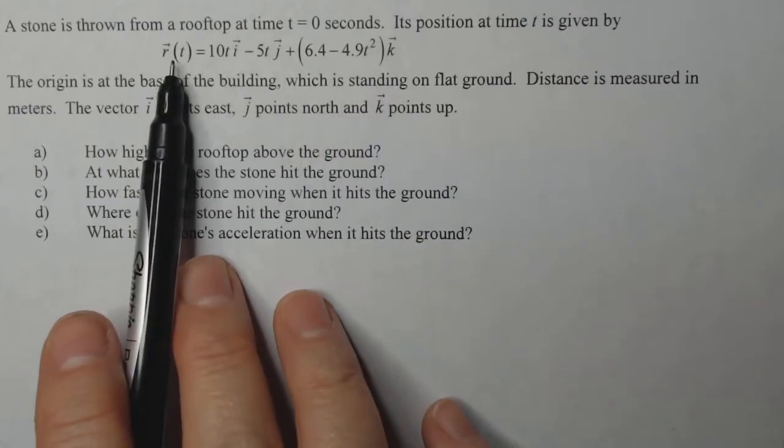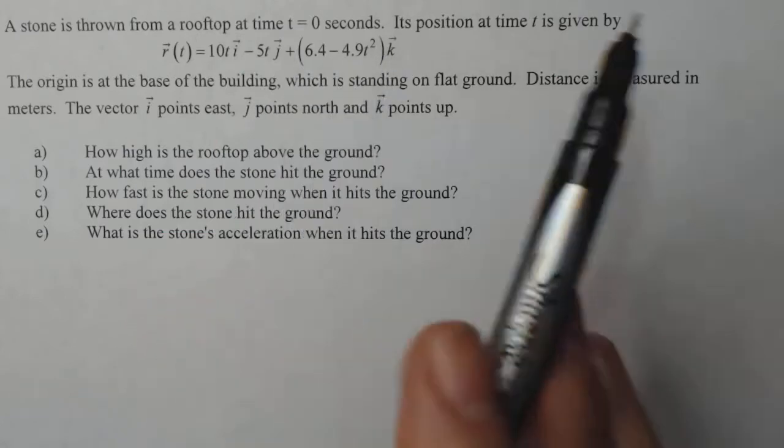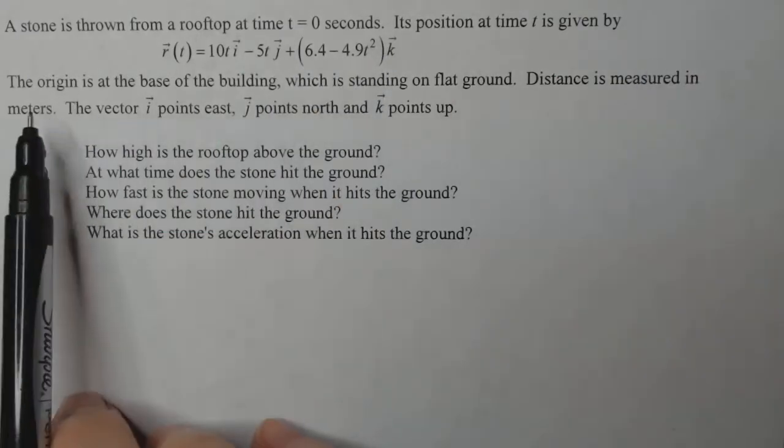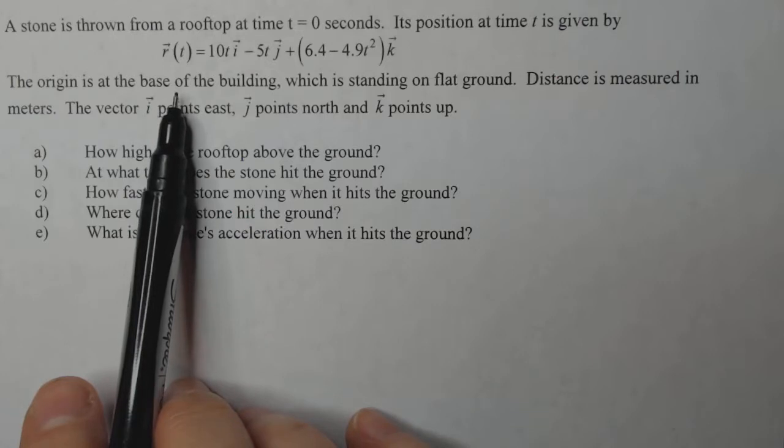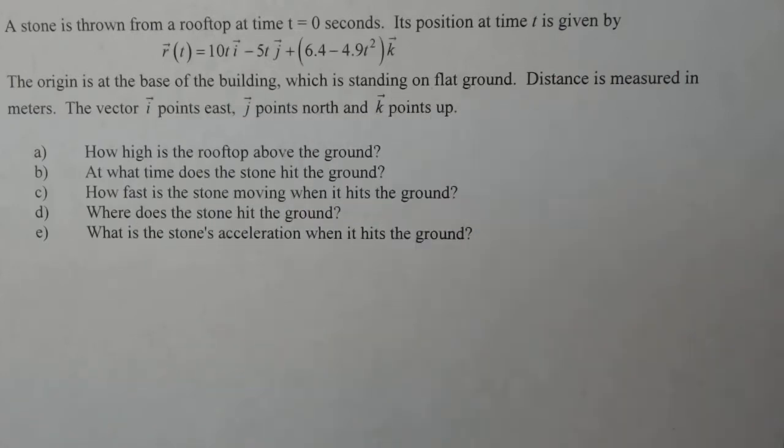So if I plug in any time t, this is going to give me its position i, j, k. Now what does that mean in terms of the problem? The origin is at the base of the building, which is standing on flat ground. That means that the base of the building is in the xy plane.